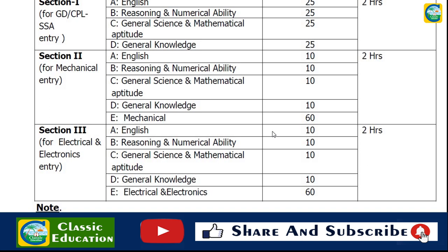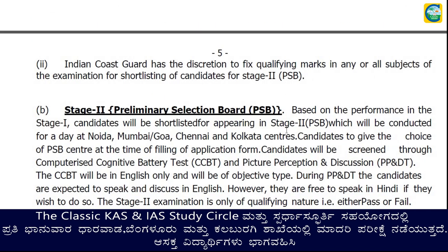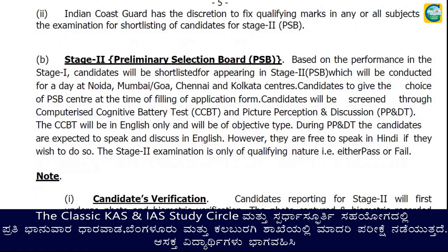After Stage 1, candidates move to Stage 2 — the Preliminary Selection Board examination. Depending on performance in Stage 1, candidates will be shortlisted for Stage 2, which is conducted for one day at Noida, Mumbai, Goa, Chennai, and Kolkata centers. Candidates give their choice of Preliminary Selection Board center at the time of filling the application form. Candidates are screened through Computerized Cognitive Battery Test (CCBT) and Picture Perception and Discussion Test (PP&DT). The CCBT is in English only and is objective type. The Stage 2 examination is qualifying in nature — either pass or fail.